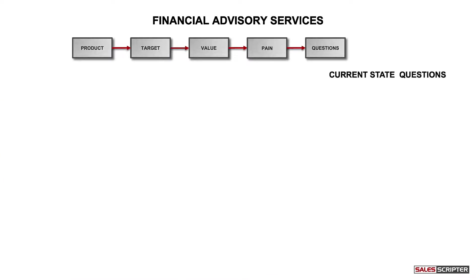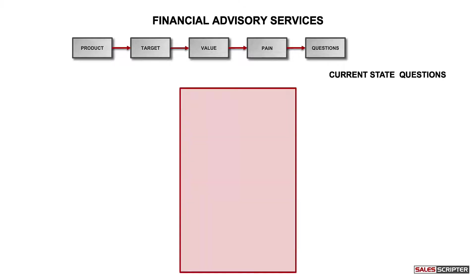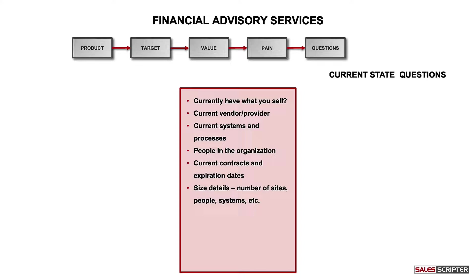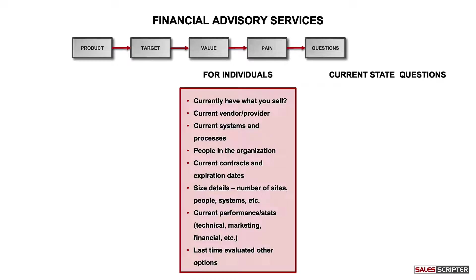We also recommend creating what we refer to as current state questions — questions that identify what the prospect is currently doing in the area where you have something to sell. If you sold cars, you'd ask: do you have a car today, what year is it, how is it running, how many miles does it have, do you own it or lease it? For each product or service there are a unique set of current state questions, but here's a guide: ask if the prospect currently has what you sell, who they bought from, details around their current systems or processes, people in the organization, current contracts and expiration dates, sizing details, current performance or stats, and the last time they looked at purchasing what you sell.